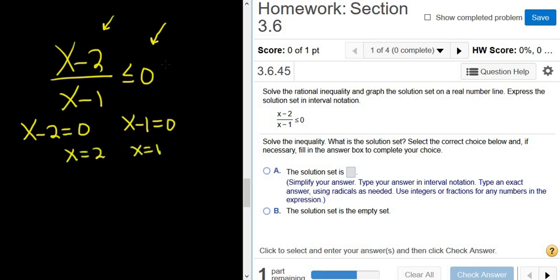So again, step 1, make sure there's a 0 here. Check. Step 2, set each piece equal to 0 and solve. Check. Now we draw a number line and you plot your answers on the number line. So 1 and 2.